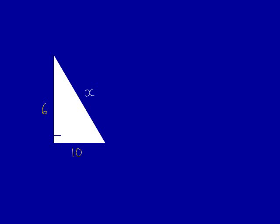For any Pythagoras question, the first thing you must do is square the sides. 6 squared, 6 times 6 is 36. We write that next to the 6. 10 squared, 10 times 10 is 100 and we write that next to the 10.